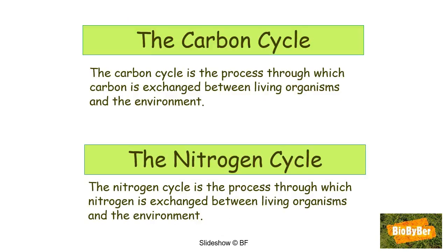Nutrient recycling is the process of exchanging elements like carbon and nitrogen between living organisms and the environment. Carbon and nitrogen might be present in living organisms at some times, and in the atmosphere at others. The carbon cycle is the process through which carbon is exchanged between living organisms and the environment. Similarly, the nitrogen cycle is the process through which nitrogen is exchanged between living organisms and the environment.